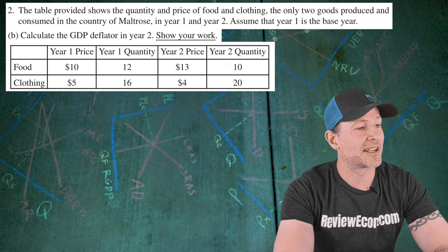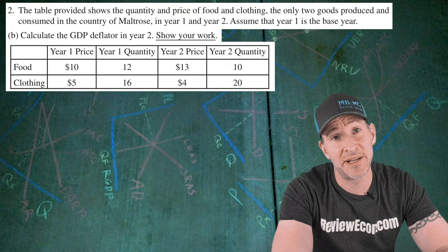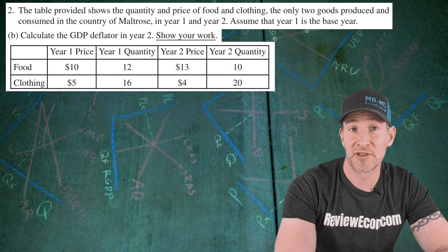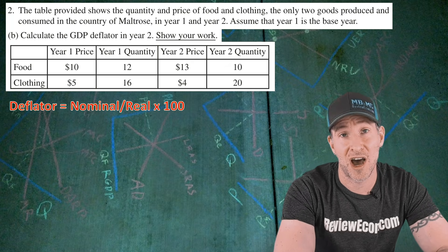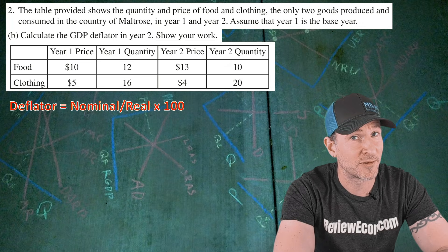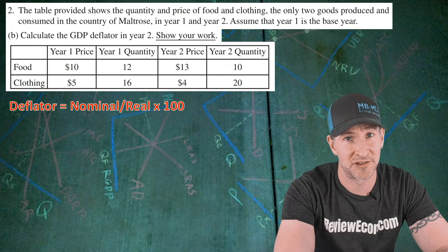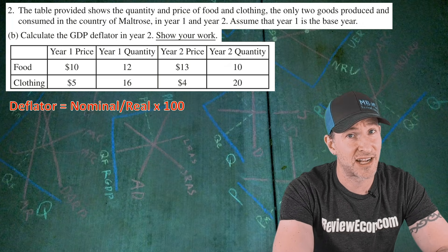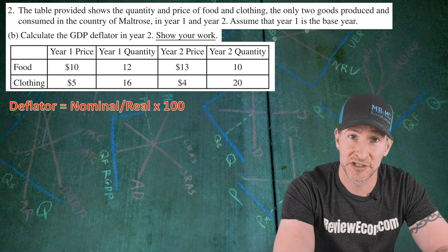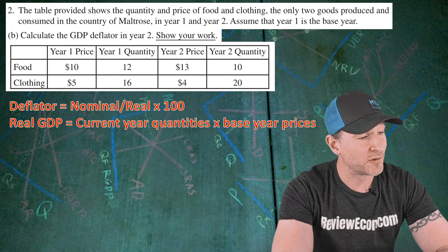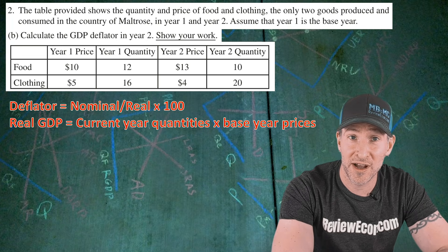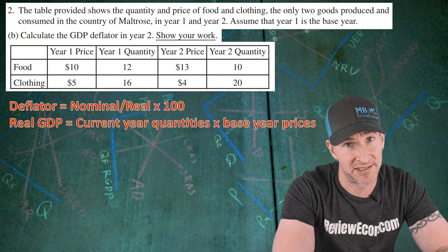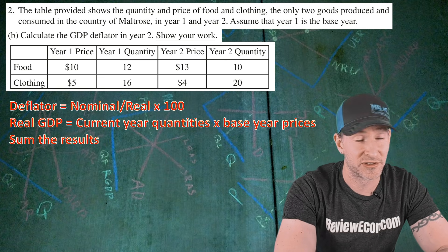For part B, we have to calculate the GDP deflator for year two and show our work. Remember, the formula for the GDP deflator is nominal divided by real, times 100. We just calculated the nominal GDP for year two, so now it's time to calculate the real GDP for year two. The formula for real GDP is the current year quantities times the base year prices, and then you once again sum the results.